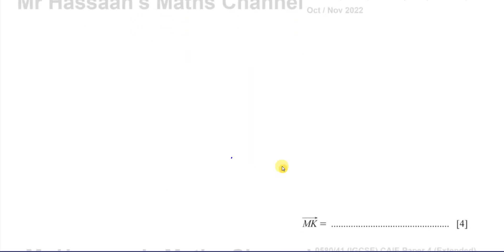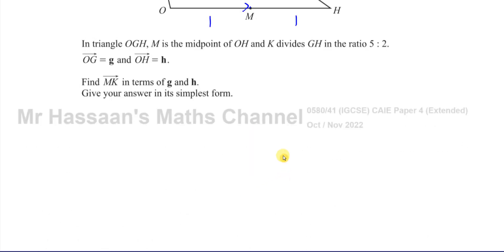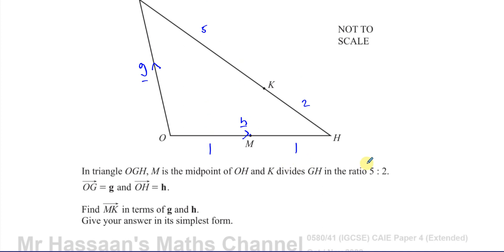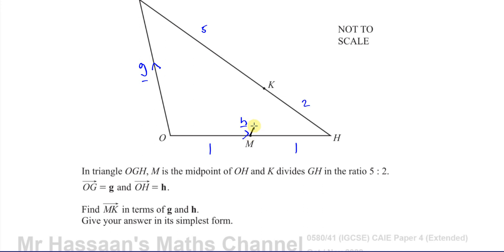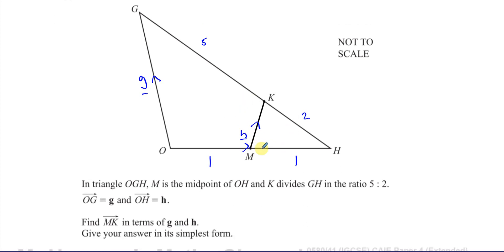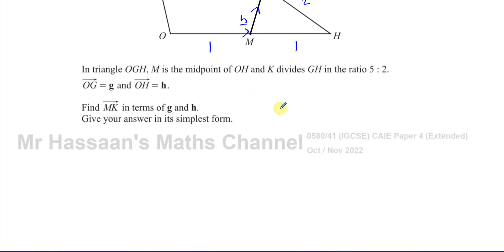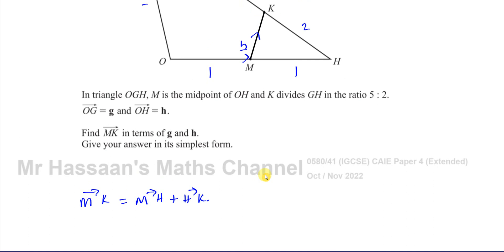It says OG is the vector g. So the vector from there to there is the vector g. And OH is the vector h. Find MK in terms of g and h, giving your answer in its simplest form. So this four marks question is all about just finding MK. So I've got to find the vector that takes me from here to here, from M to K. So if you think about MK, we could go from, for example, M to H and then H to K.